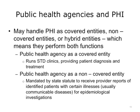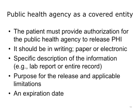There are three categories under HIPAA that a public health agency could fall into: a covered entity, a non-covered entity, or a hybrid entity, which performs both covered and non-covered functions. An example of a covered entity is a public health agency that runs STD clinics providing diagnosis and treatment to patients. An example of a non-covered entity that still handles PHI is one mandated by state statute to receive PHI from covered providers in order to conduct an epidemiological investigation. If the public health agency is a covered entity, it must follow all applicable HIPAA provisions — namely, it must obtain patient authorization before releasing PHI unless an exception applies.